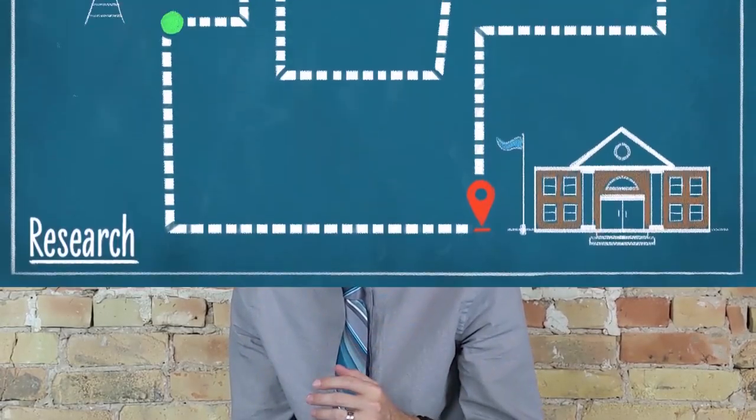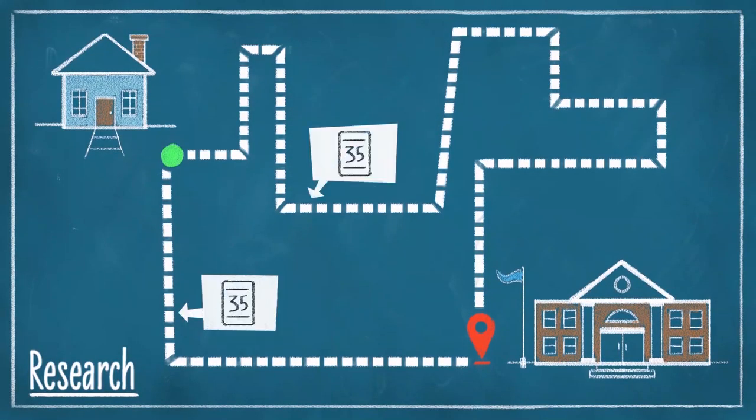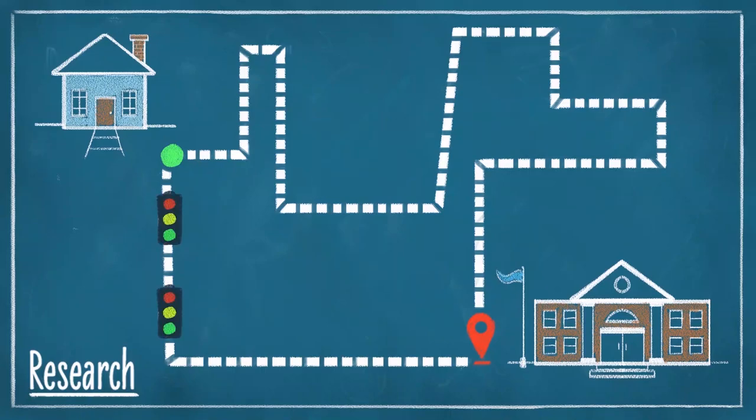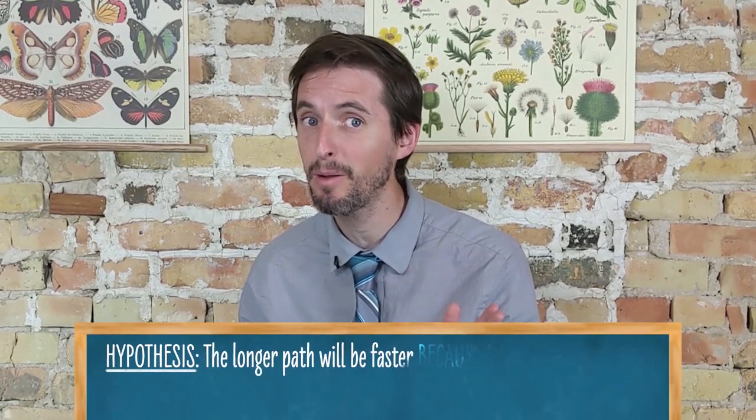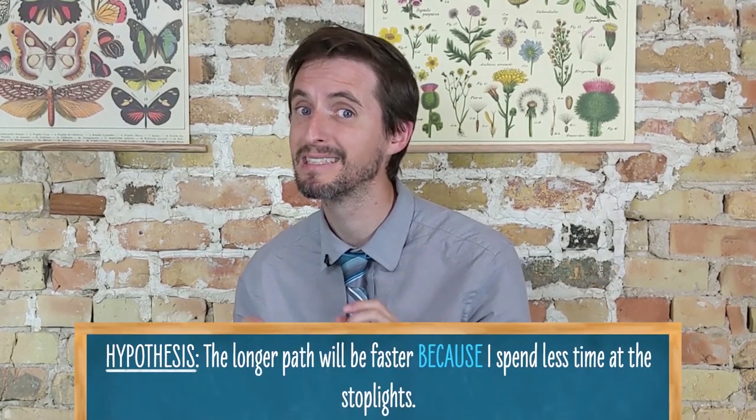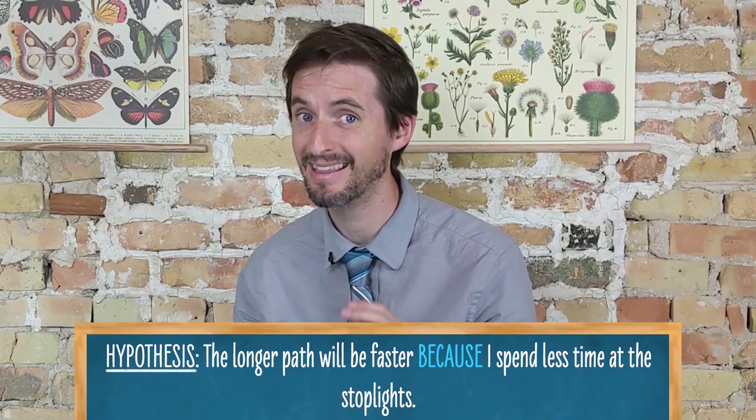To avoid wasting my time testing highly unlikely explanations, I will find out as much as I can about these roads. By doing this, I learned that both roads have the same speed limit, but the short path has more stoplights than does the long path. And this might lead me to hypothesize that the longer path will be faster because I don't spend as much time at the stoplights.